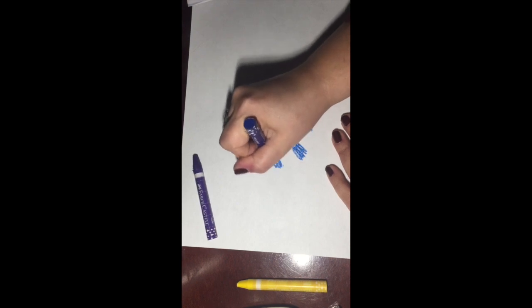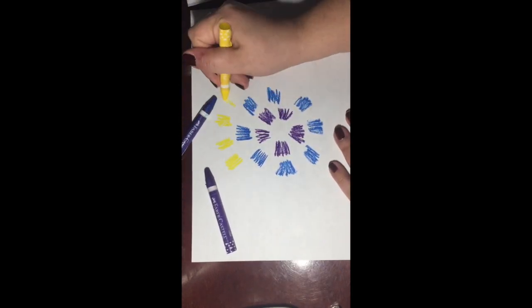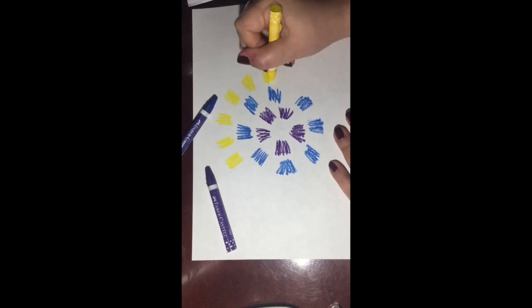And then all I'm going to do is make some marks. I'm making kind of these scratchy rectangles going around in the shape of a circle. After I complete this little circle, I'm going to make an even bigger one with another color.